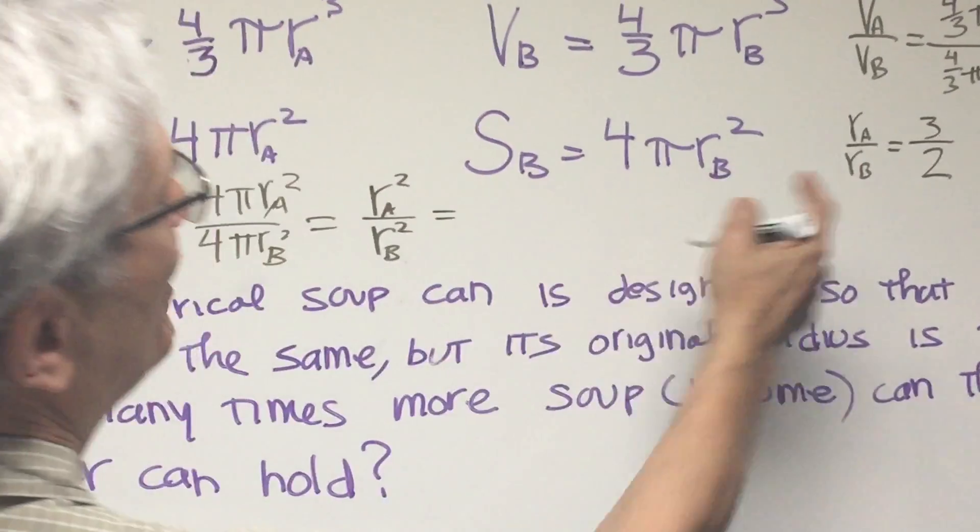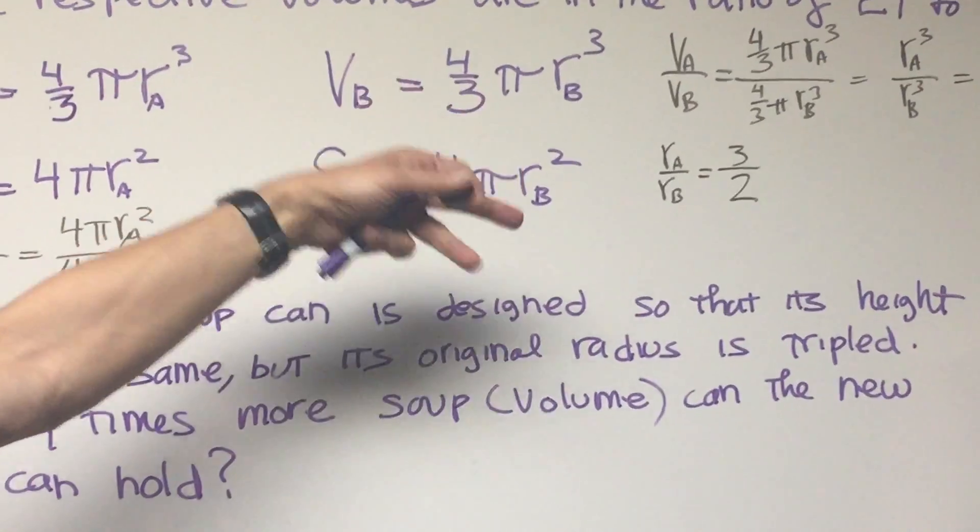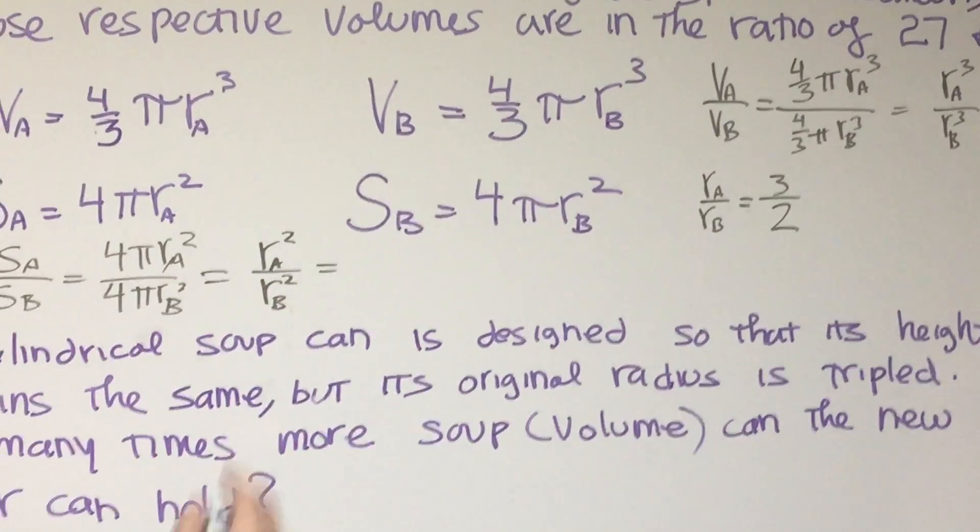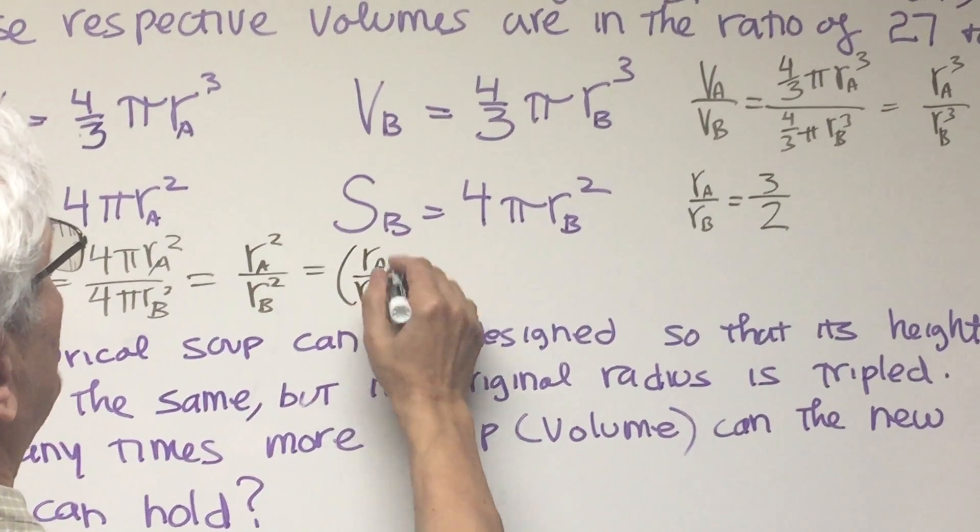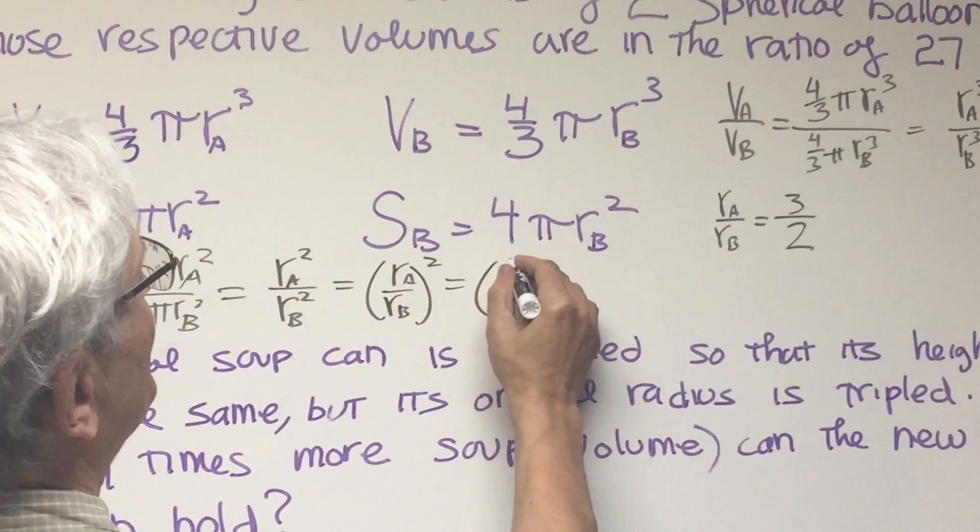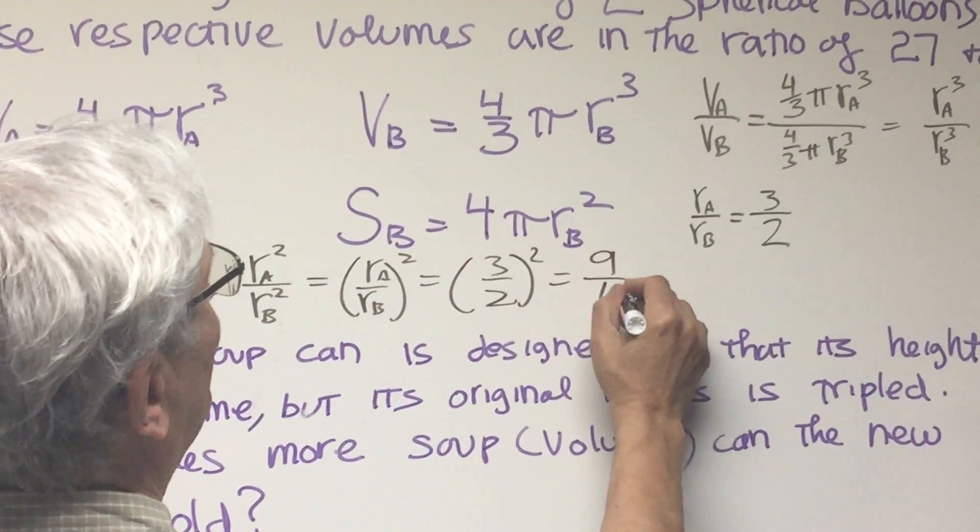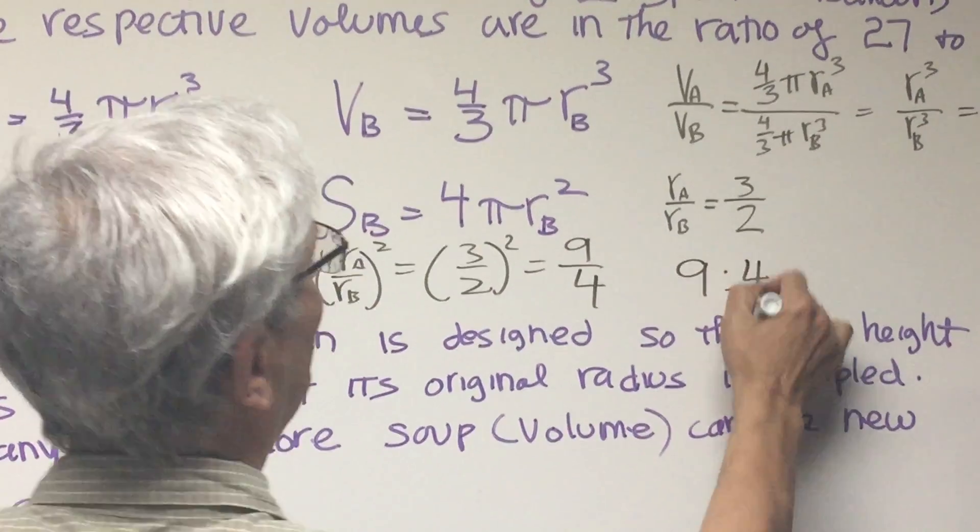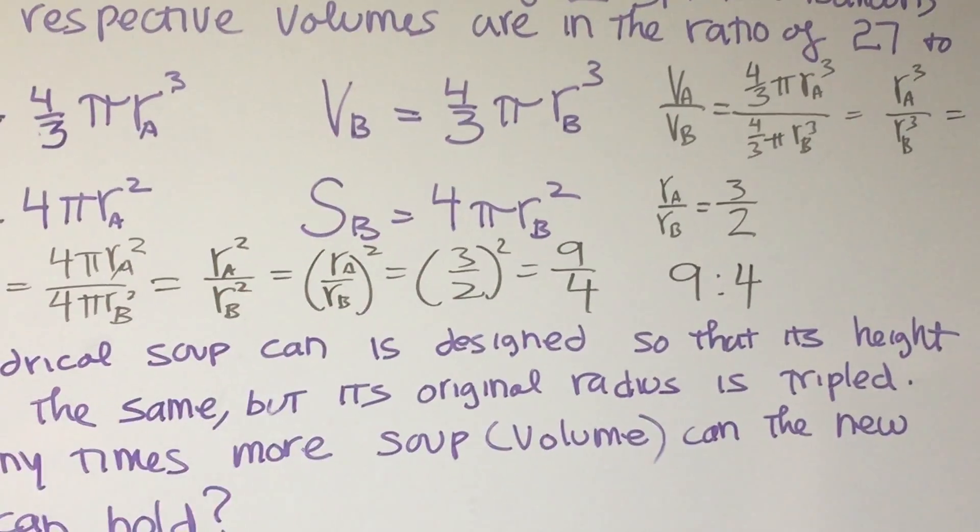And so we know what the ratio of radii is. rₐ to rᵦ is 3/2. So this is going to be rₐ, the ratio of that to rᵦ squared. This is going to be (3/2)² and the answer is 9/4, or 9 to 4. The ratio of their surface areas is then 9 to 4.